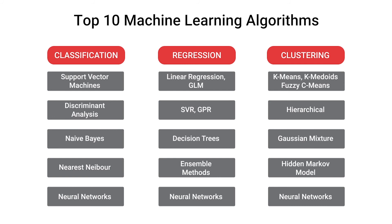Neural network is something which can be used across all the tasks. It is basically one of the most used machine learning techniques, which can be used across different tasks — you can use neural networks for regression, for classification, for clustering, for principal component analysis, for dimensionality reduction. Almost all the tasks can be done using the neural network technique.